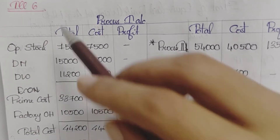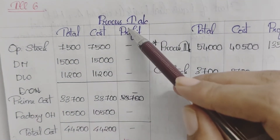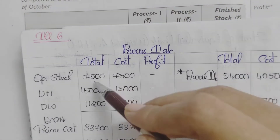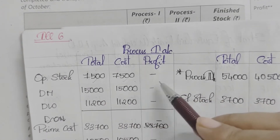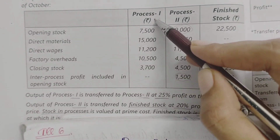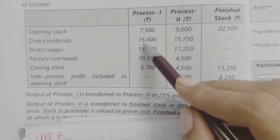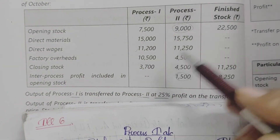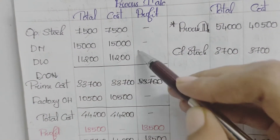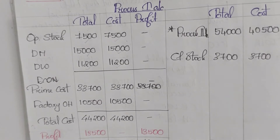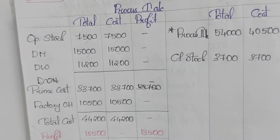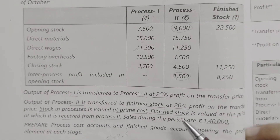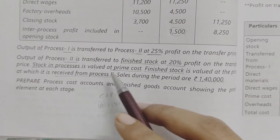We provide three columns: total, cost, and profit. Process 1 account: opening stock is 7,500. There is no profit element in the opening stock of Process 1. Direct materials cost is 15,000. Factory overhead is added. Total cost calculations proceed.